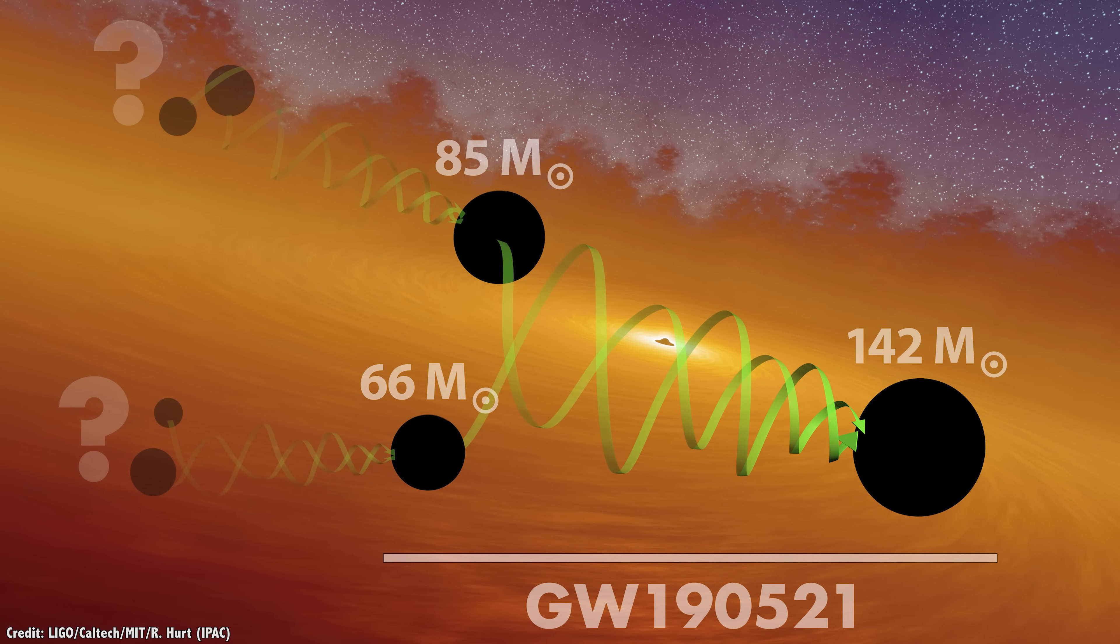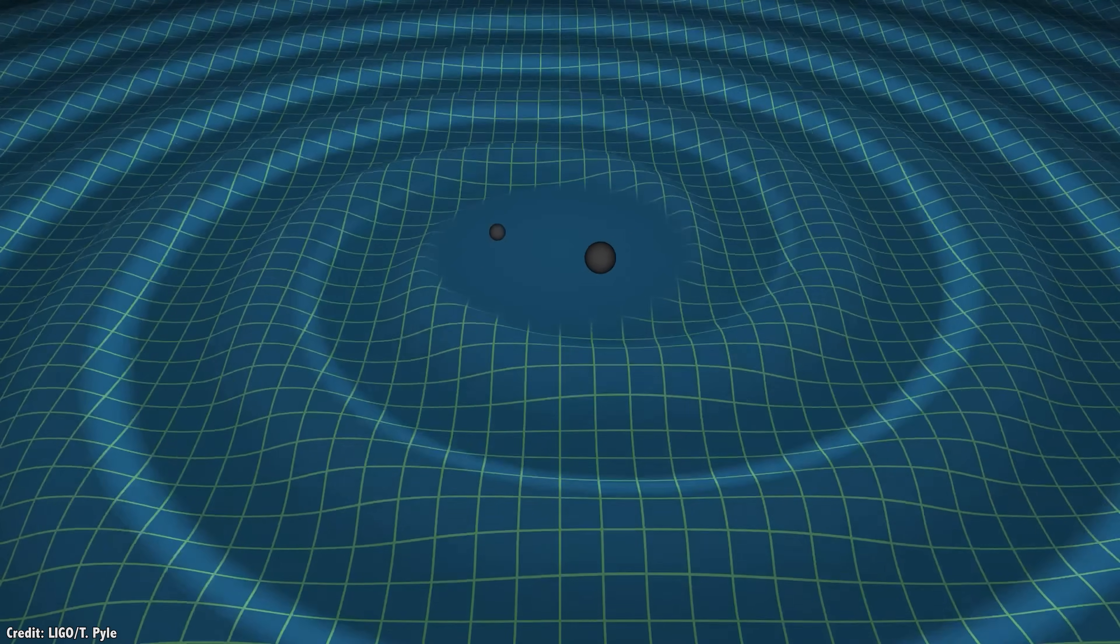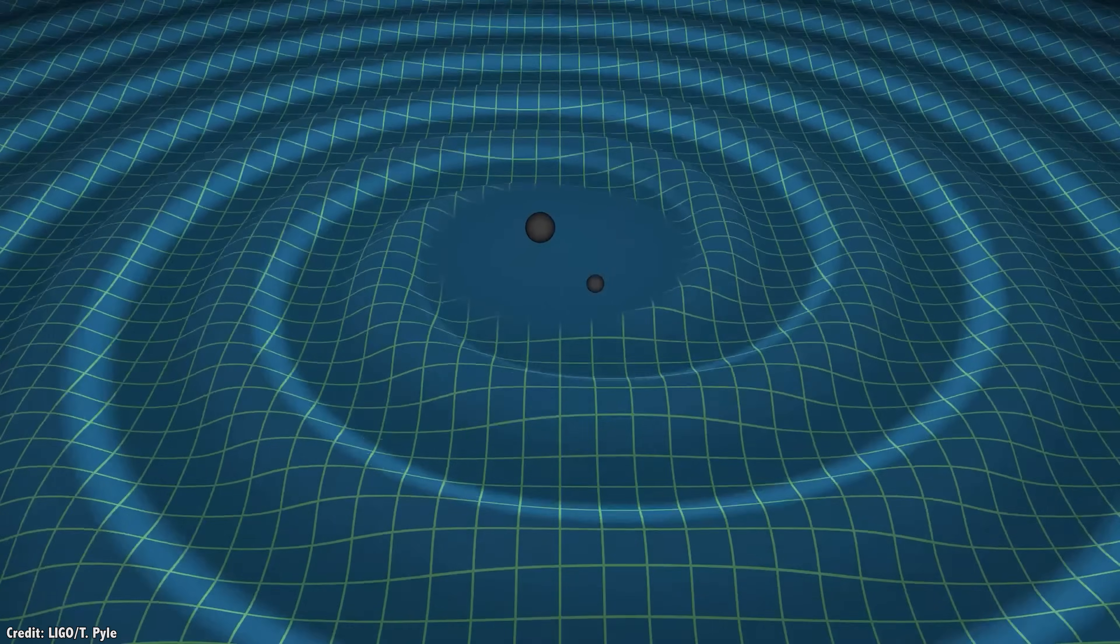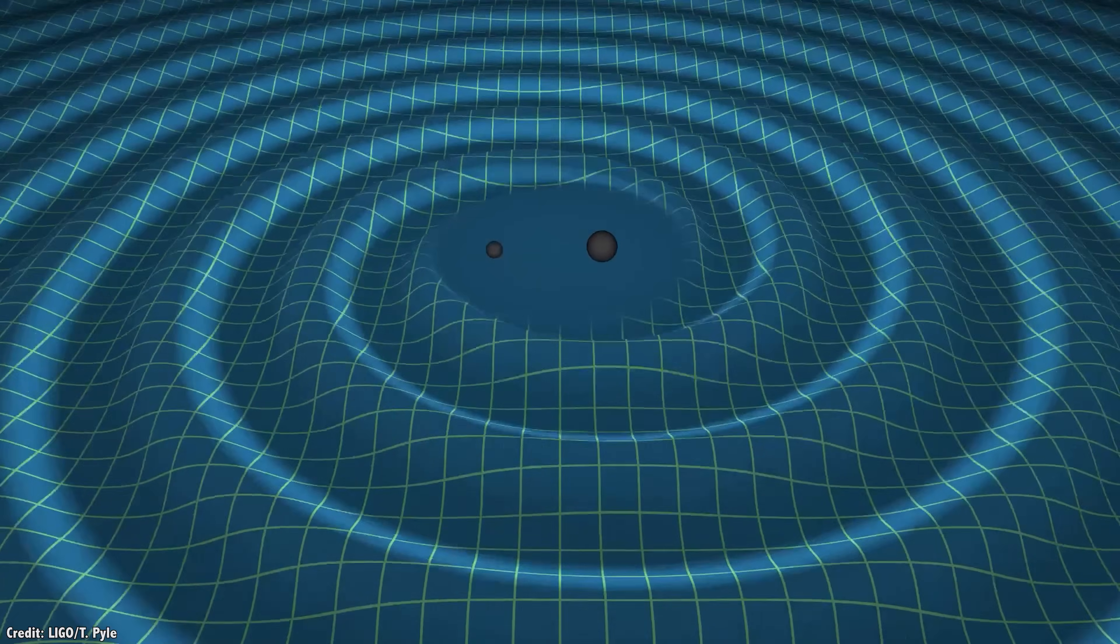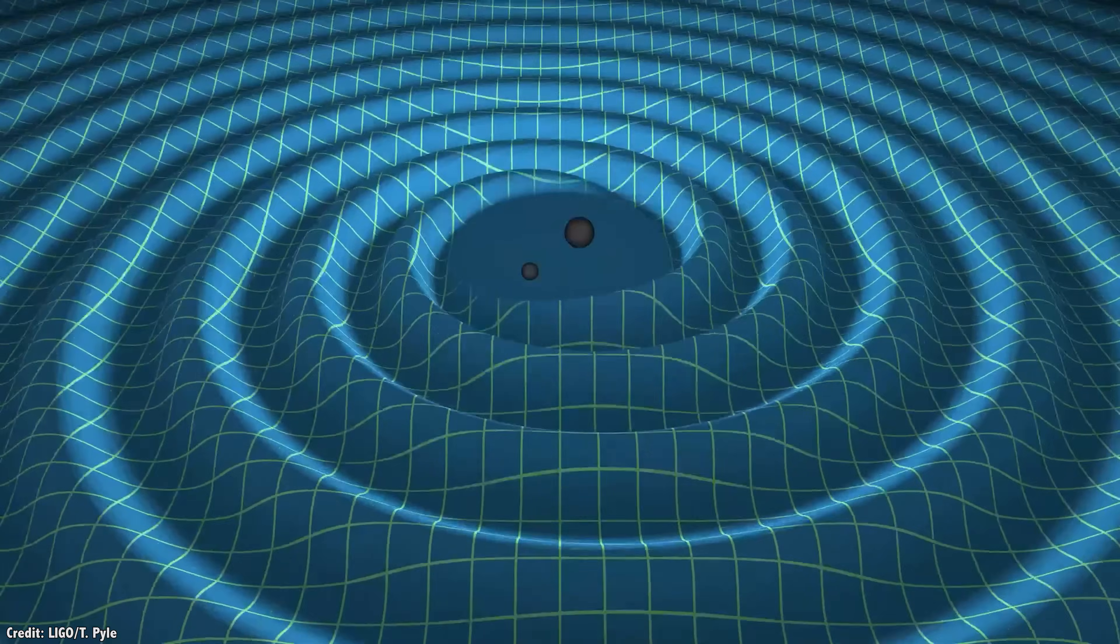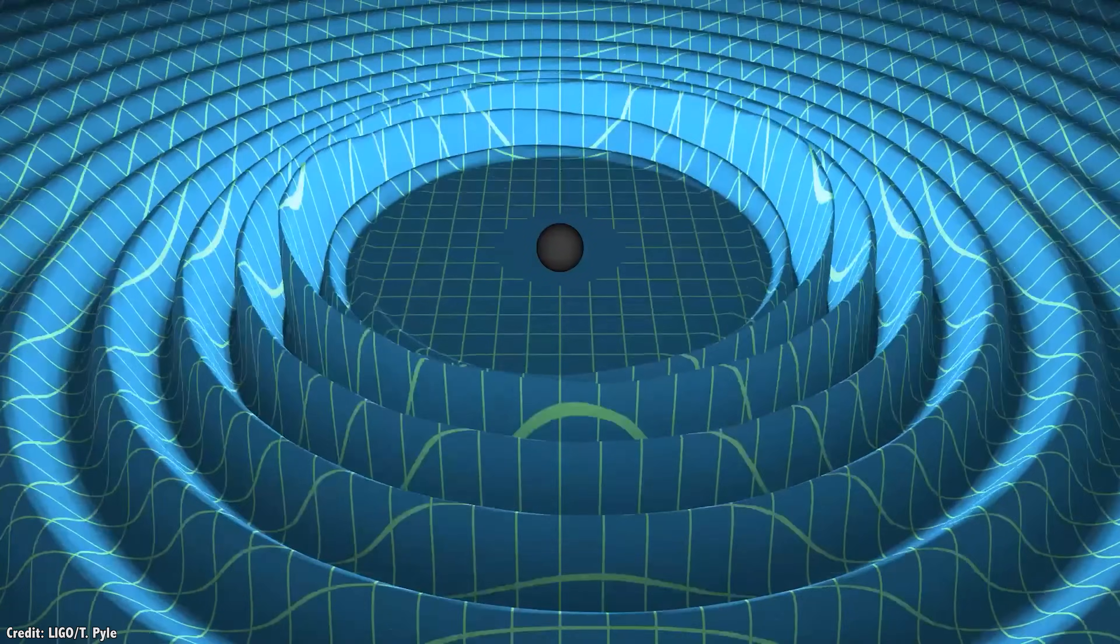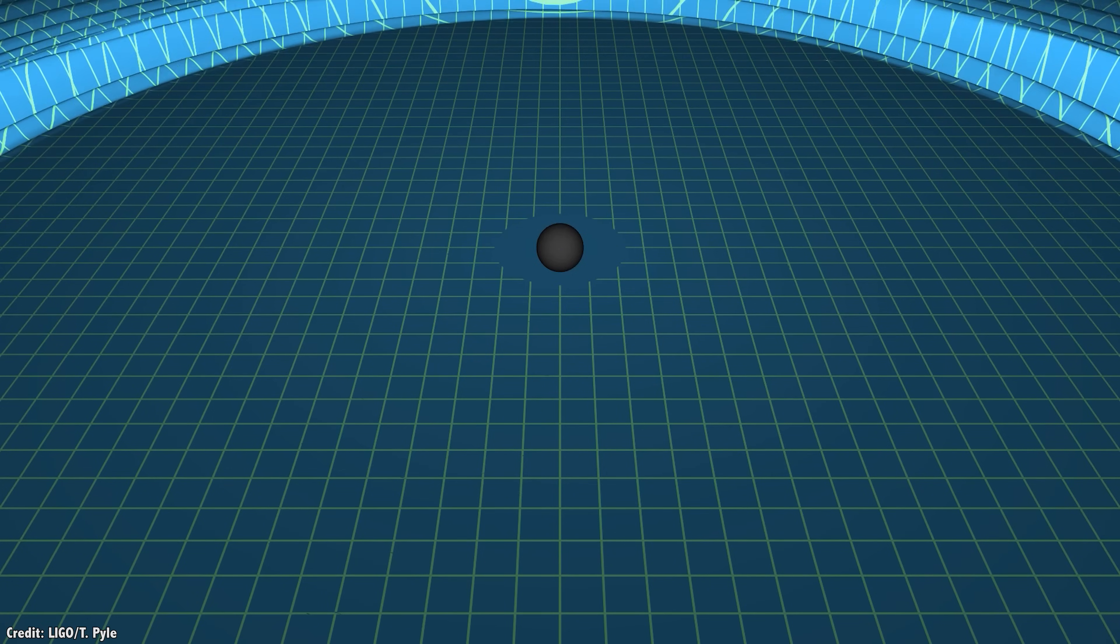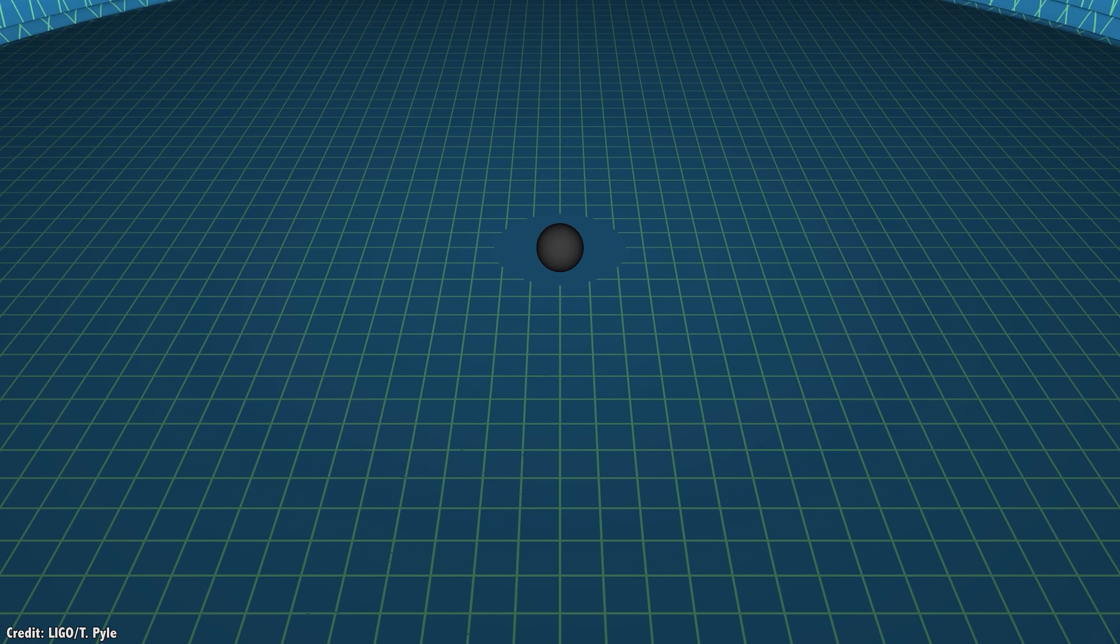So where did this black hole come from? Obviously, it could have been the result of a previous merger. But another intriguing idea is that it's a primordial black hole. If more of these collisions are detected, it could help astronomers constrain the number of intermediate mass black holes in the universe and figure out if they're a candidate for dark matter.